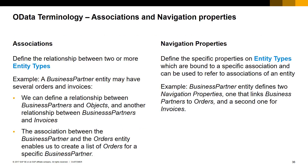Associations and navigation properties are defined in the service layer metadata document. Associations define the relationship between two or more entity types. For example, in the case of the business partners entity, a specific business partner may have several documents such as orders and invoices stored in a company database. In the metadata document, there is one association for the relationship between business partners and orders, and another association between business partners and invoices. Navigation properties define the specific properties that refer to the existing associations. In our business partners entity type, we have two navigation properties: one that links to the orders association, and a second one that links to the invoices association.